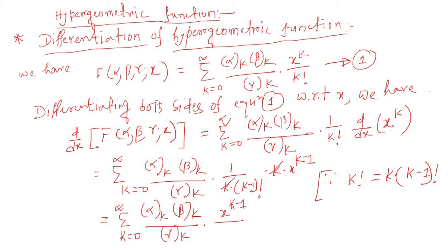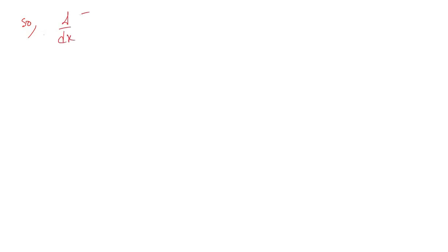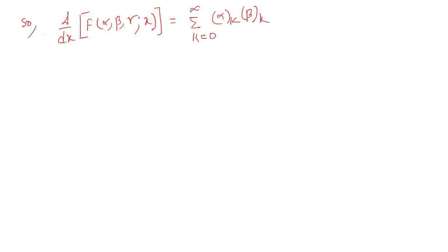Therefore, d/dx F(α, β; γ; x) equals summation k equal to 0 to infinity of (α)_k (β)_k over (γ)_k times x to the power (k minus 1) over (k minus 1) factorial.